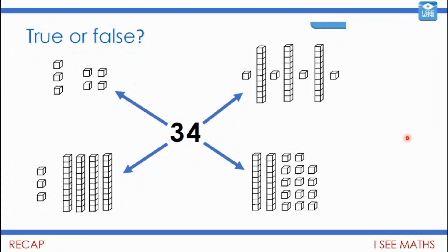So we shall start with a little recap from yesterday. We were looking at different ways of making numbers with tens and ones and hundreds. So here, have a look at these examples. True or false for these four possibilities? Is it 34? Pause the video and have a go.